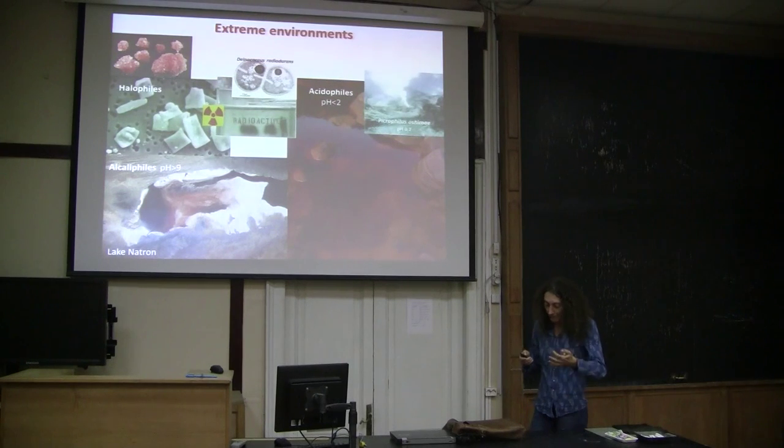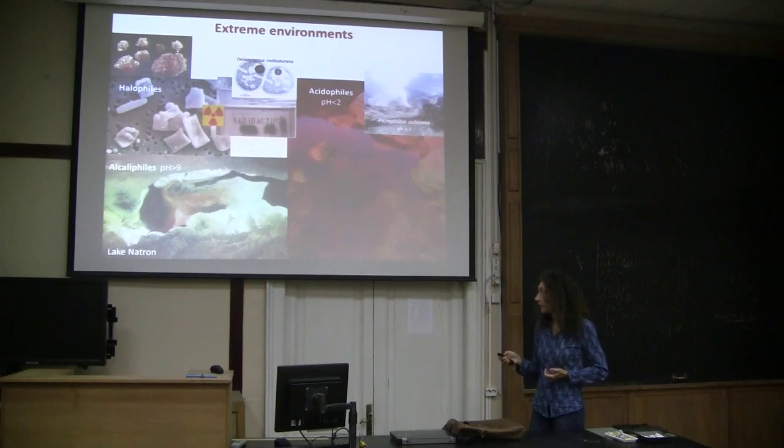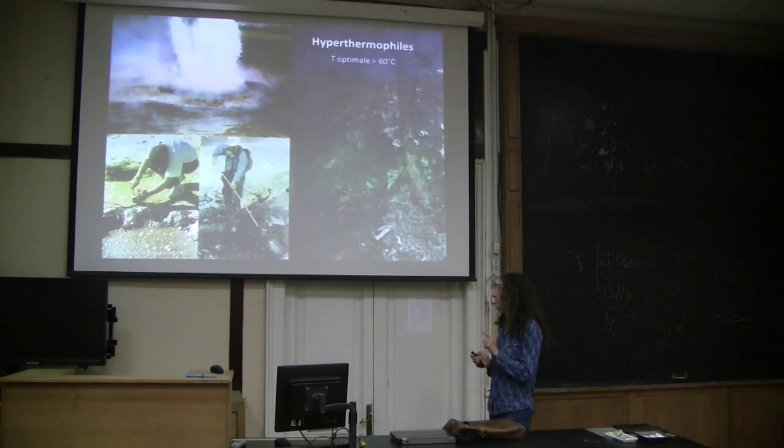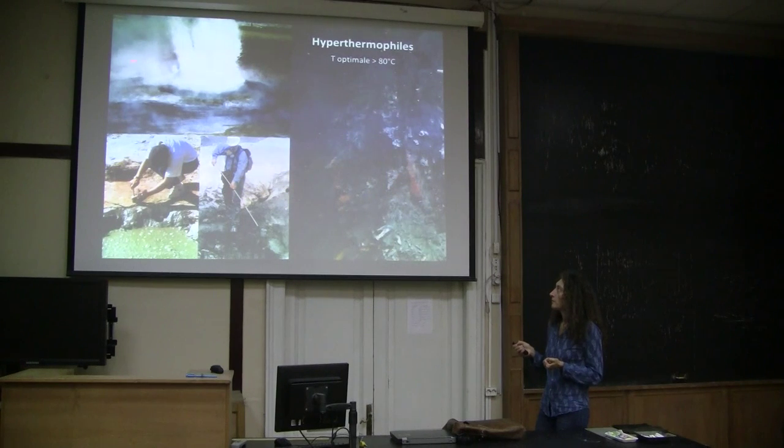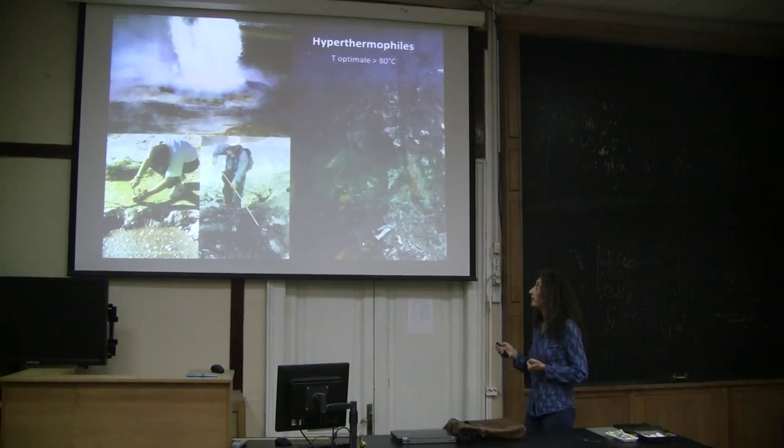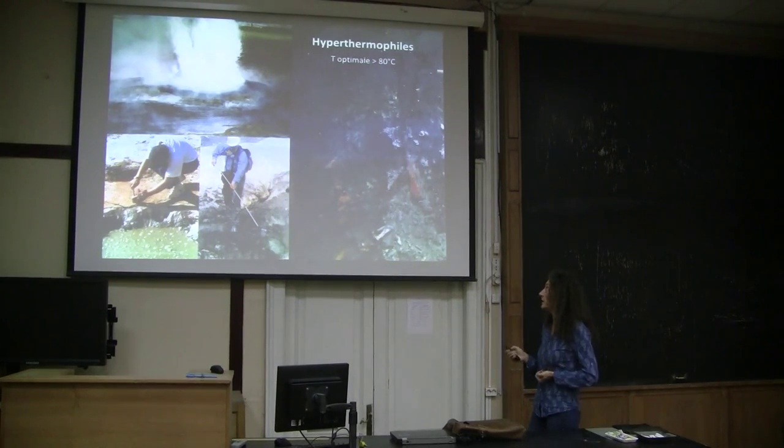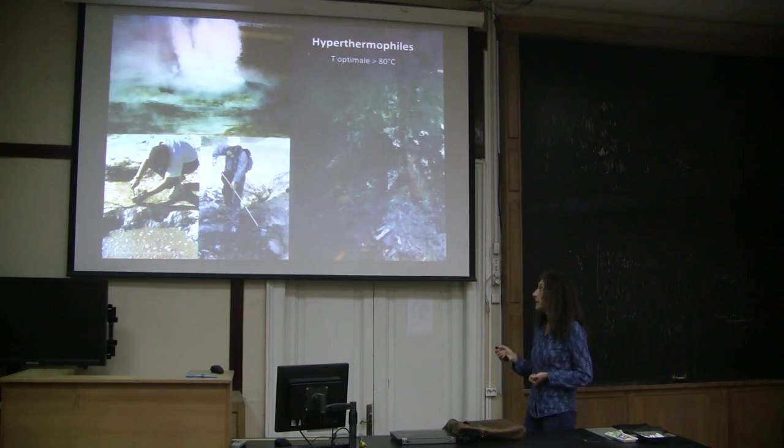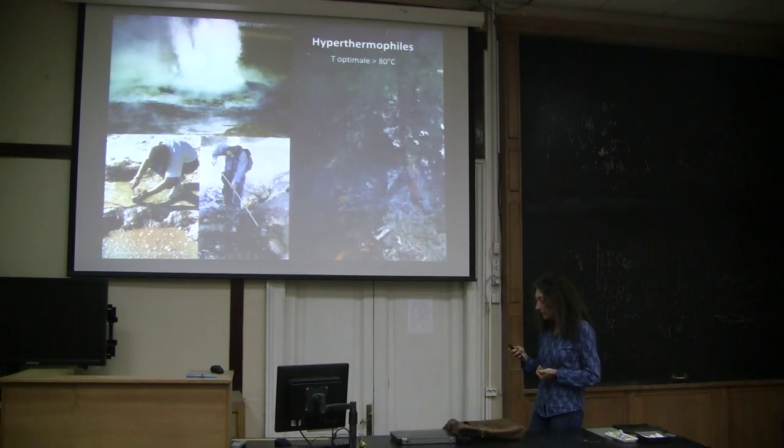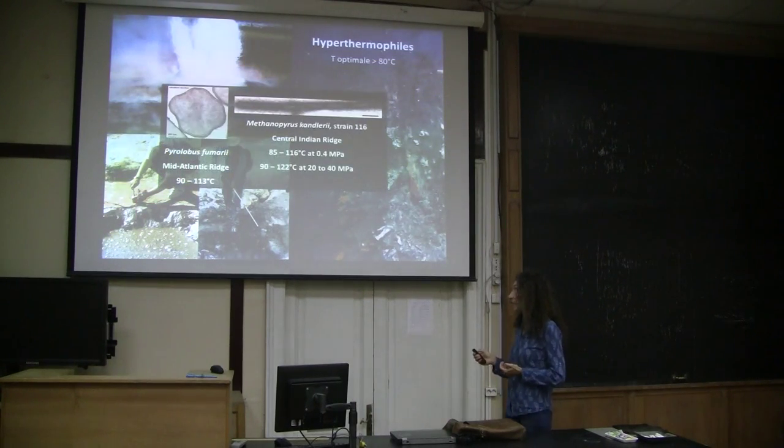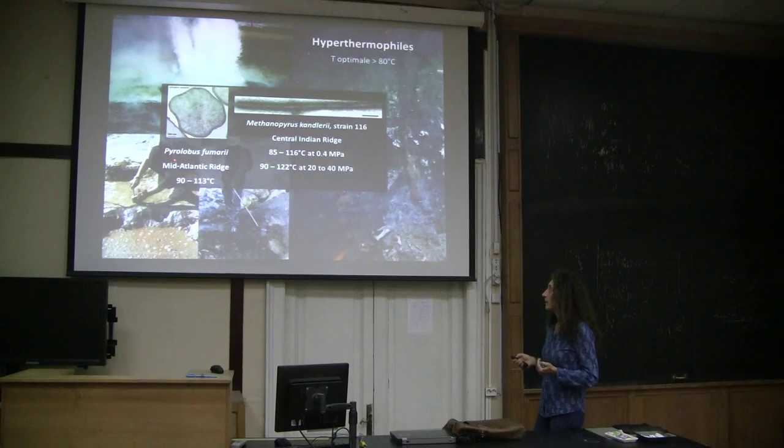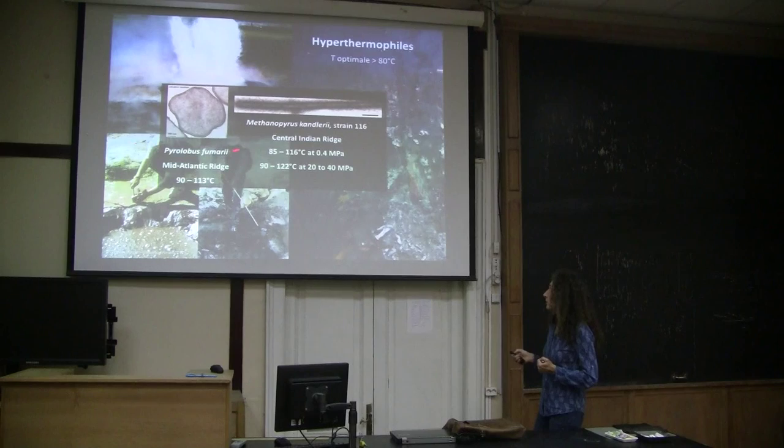And perhaps the most fascinating extreme environments that people have studied and are pertinent to the origin of life are hot environments such as volcanic hot springs or deep sea vents, where you find organisms called hyperthermophiles growing optimally at temperatures higher than 80 degrees. And the records today for hyperthermophiles belong to organisms that live in deep sea vents, because here you have water that can be kept at a liquid state at temperatures higher than 100 degrees.